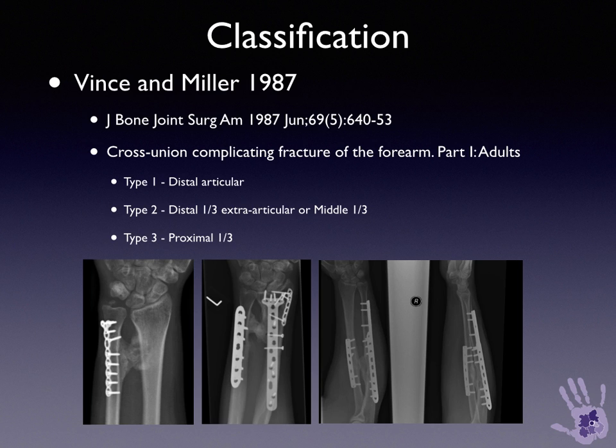Vincent Miller published two papers describing cross-union complications in both adults and children. The three types defined were: Type 1, distal articular involvement, which had higher rates of recurrence; Type 2, distal third extra-articular or middle third synostosis; and Type 3, proximal third synostosis, which had relatively lower rates of recurrence.